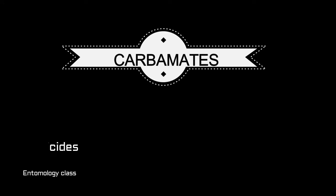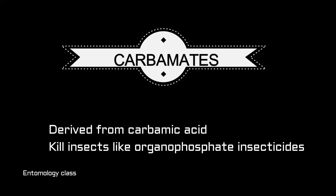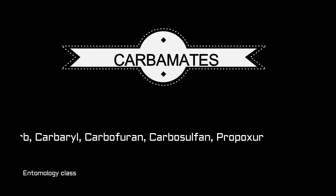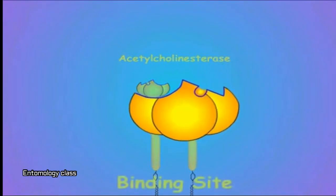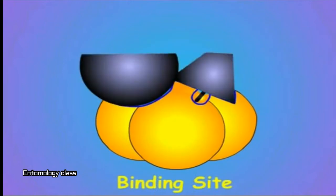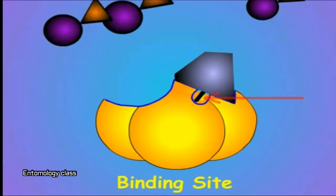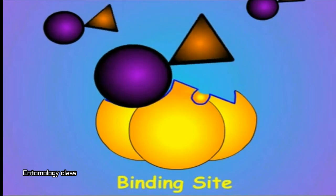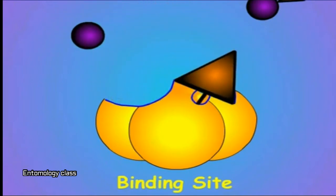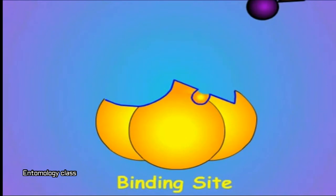Our next insecticide group is carbamates. Carbamate insecticides are derived from carbamic acid and kill insects in a similar fashion as organophosphate insecticides. They are widely used in homes, gardens, and agriculture. Some examples are carbaryl, carbofuran, carbosulfan, and propoxur. Like the organophosphates, the mode of action of carbamates is inhibition of acetylcholinesterase enzyme, affecting nerve impulse transmission. Unlike organophosphates, the carbamates physically align with the enzyme and not chemically, and the enzyme could be disassociated from the carbamate if the pressure from the insecticide is relieved. So the reaction is reversible in the case of carbamates.